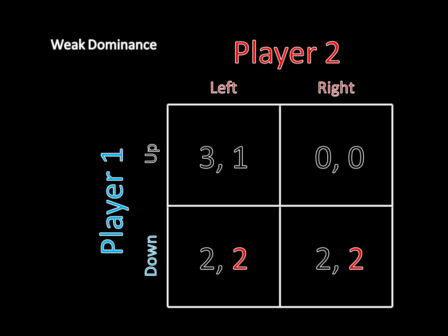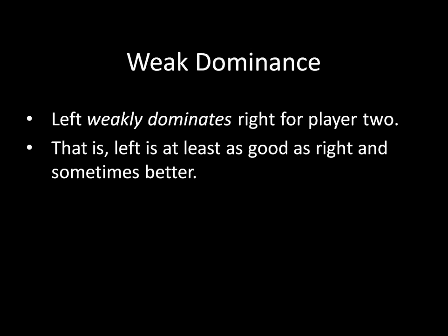We refer to this as weak dominance — left weakly dominates right. If left were to strictly dominate right, it would require that indifference to go away; left would always have to be better than right. But here it's just equally as good in one case, so left does not strictly dominate right — it only weakly dominates it. Left weakly dominates right for player two because left is at least as good as right and sometimes better.